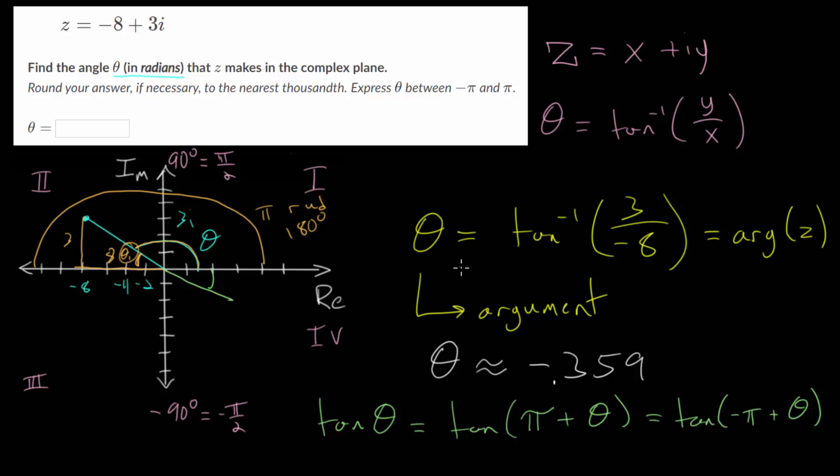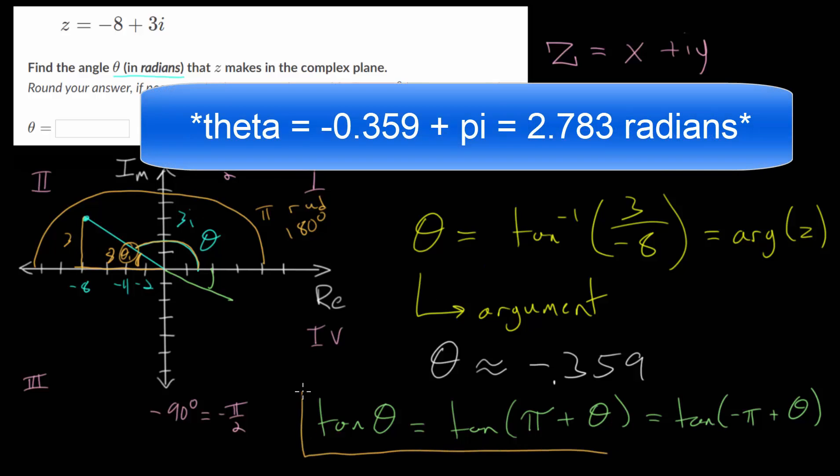So there are many different approaches. We can just construct right triangles, or we can use this formula and consider these different identity functions to essentially shift our angle to the appropriate spot in this complex plane.